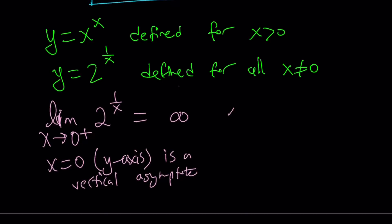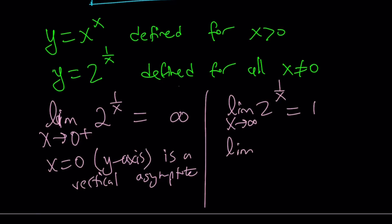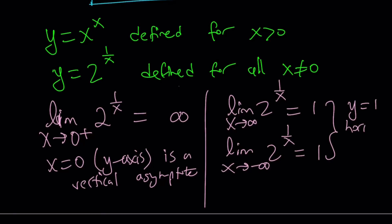What about the limits at infinity? As x approaches infinity, 1 over x approaches 0, and 2 to the power of 0 approaches 1. So the limit is going to be 1. The same thing goes for negative infinity — they both approach 0. So we have a horizontal asymptote at y equals 1. It kind of has two asymptotes, like a rational function, and that gives you an idea about the boundaries.